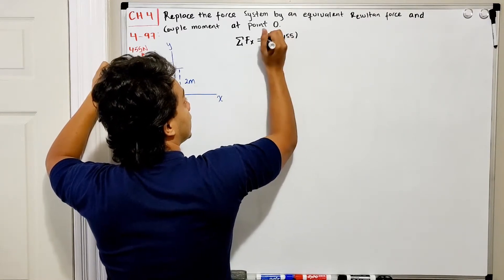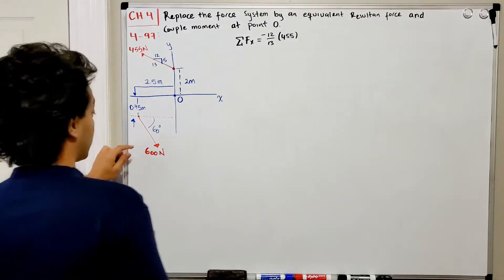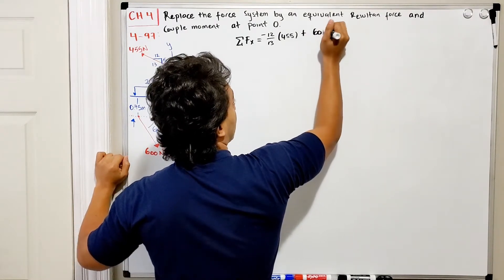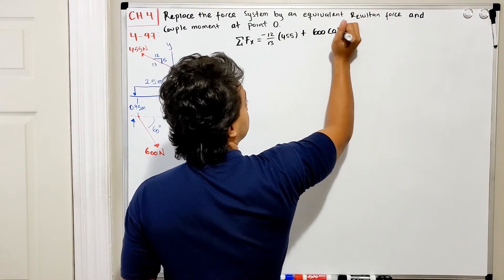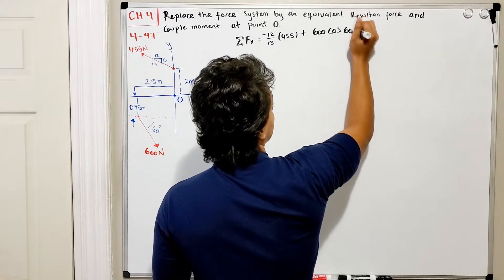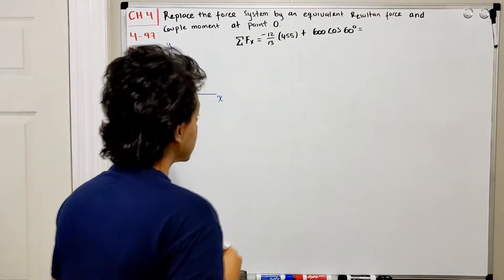But it's in the negative direction. Then we have a positive 600 N going to the right, defined by the angle which is the cosine of 60 degrees.